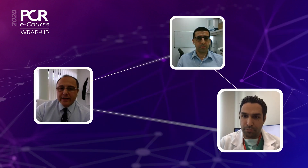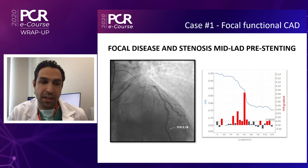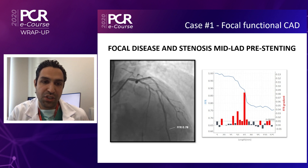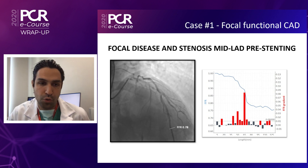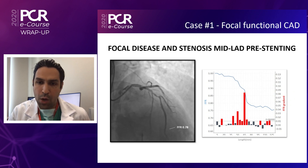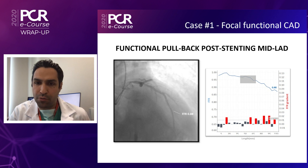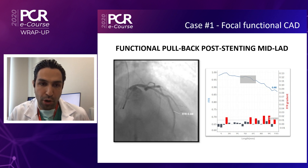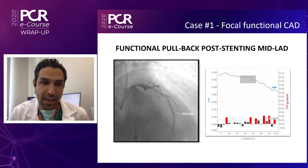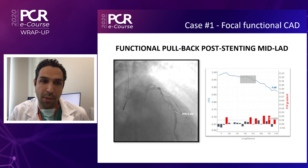Let's look at two cases. The first is an LAD with an FFR of 0.78 distally. The pullback curve shows a clear step-up in the mid-section of the LAD. After performing PCI covering this segment of pressure drop, we get a very nice angiographic result, the pressure step-up in the mid-segment is resolved, and we end up with an FFR of 0.88. We can say that focal functional disease is a favorable endotype for PCI.